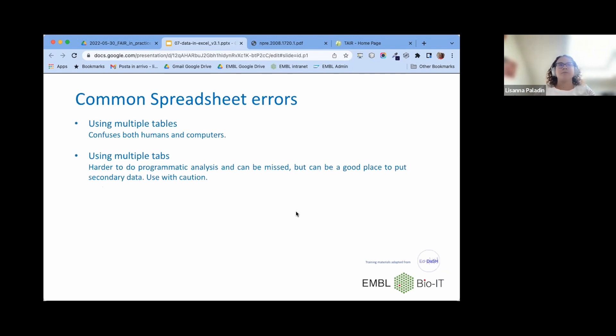The common spreadsheet errors that we mentioned so far are using multiple tables inside the same spreadsheet. A partial solution might be to use multiple tabs inside the same Excel file. But just a warning that when you are exporting to CSV or TSV, you will need to export a specific tab inside a different file. So this might change your file structure. The suggested way is just to go for multiple tables correspond to multiple files. That's the easiest way of managing this.